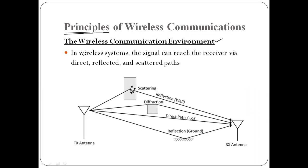In wireless communication systems, the signal can reach the receiver via direct, reflected, and scattered paths. Here we have the transmitting antenna on the transmitter side and the receiving antenna on the receiver side.